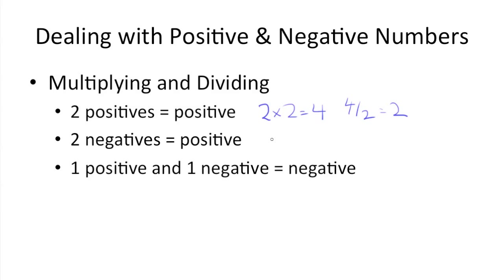When you have two negatives, that's going to turn the answer positive. So if we have negative 2 times negative 2, that's also going to get you 4. Or negative 4 divided by negative 2, that's also going to get you positive 2.